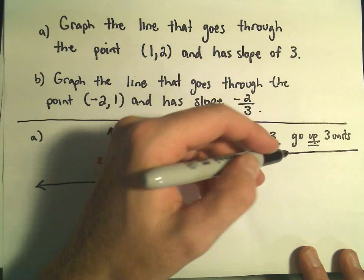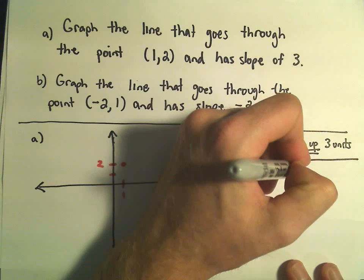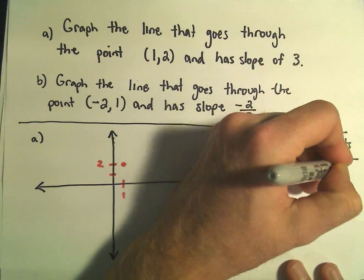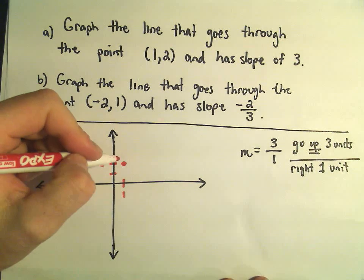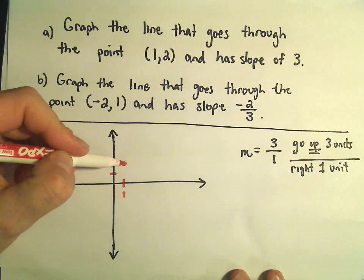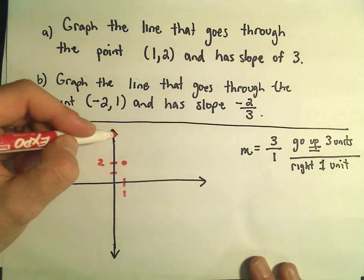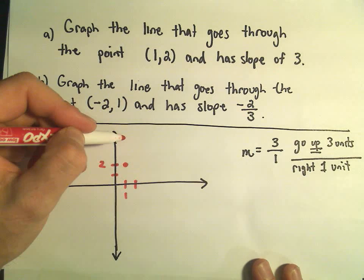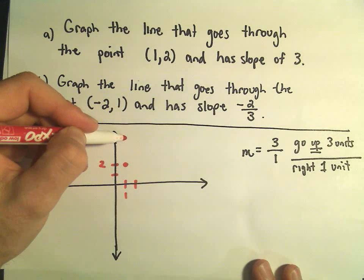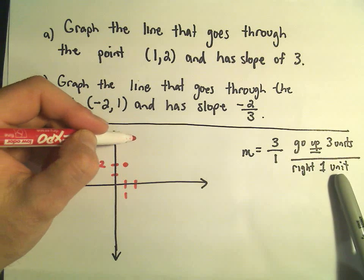And then the denominator, the 1, since it's positive 1, that's the change in X. It says go up 3 units and right 1 unit. And that'll give me another point that's on the line. So if I were to go up, since I'm sitting at the Y coordinate of 2, if I were going to go up 3 units, I would go up to 3, 4, 5.